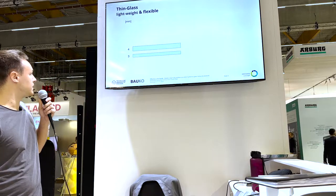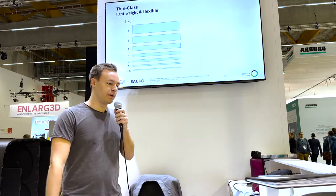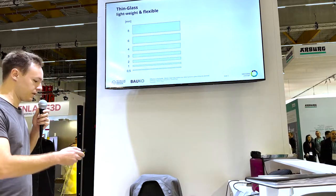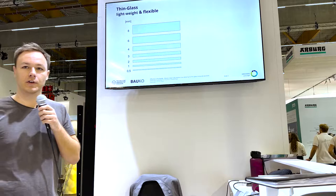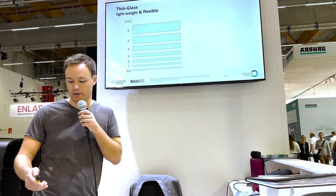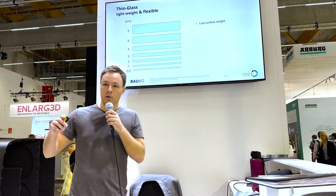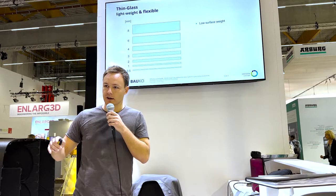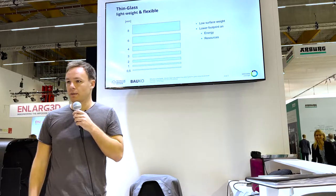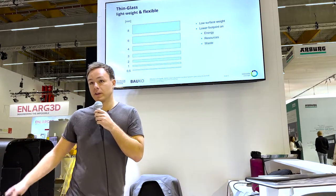Starting with usual glass sizes: in the glass industry you start with 3 or 4 mm; 6 or 8 mm are more often used. We try to leave this comfort zone and use very thin sheets of glass — 2 mm, 1 mm, or even 0.5 mm. The benefit is a very low surface weight, so we can construct very lightweight composite or facade elements, and by saving so much material we lower our footprint in energy, resources, and waste.